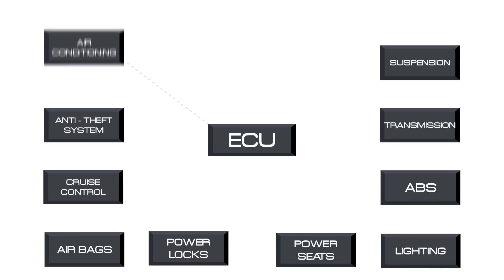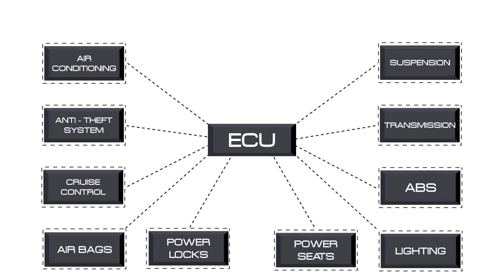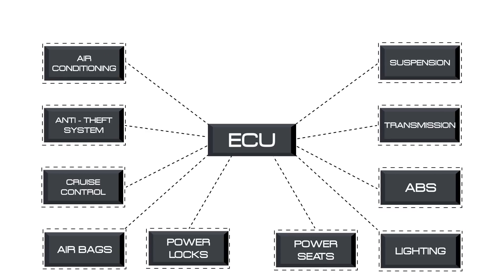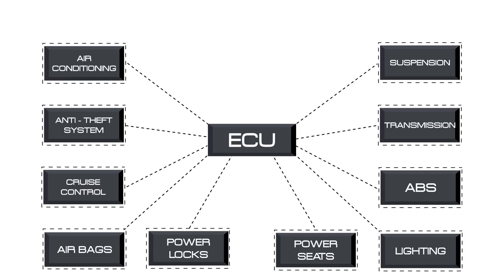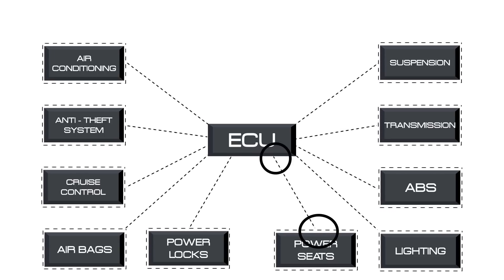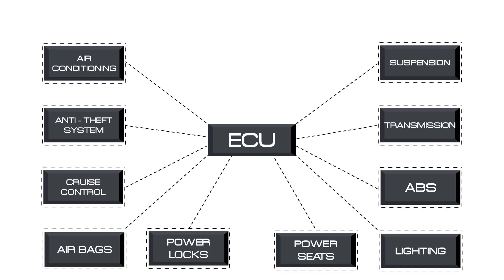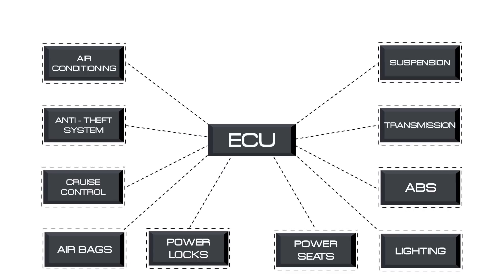Back in the day, when the world was less concerned about the environment, there were fewer sensors and modules in the car. At that time, all sensors and modules were connected by point-to-point wires, because they didn't need to be linked together for exchanging real-time information.